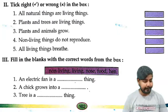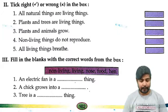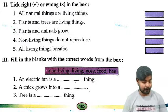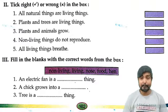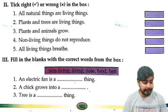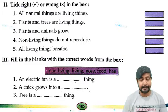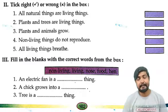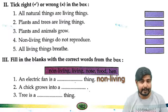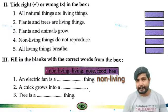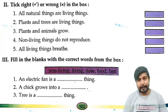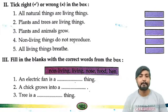Number 3: Filling the blanks with correct words from the box. Number 1: An electric fan is a dash thing. The answer is non-living. An electric fan is a non-living thing.